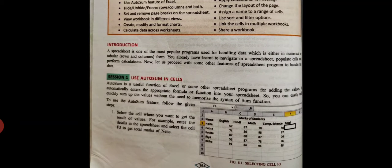Now, use AutoSum in cells. What is AutoSum? AutoSum is a useful function of Excel or some other spreadsheet program. What it does is it adds the values automatically. Once you click on AutoSum, it automatically enters the appropriate formula or function into your spreadsheet.